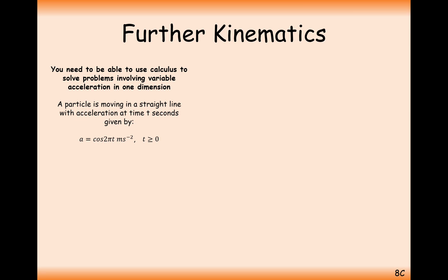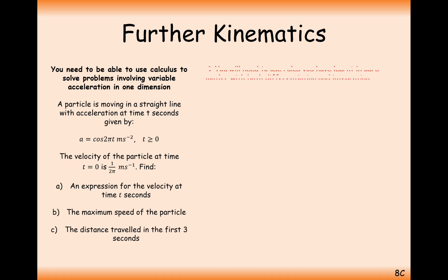So let's get started on the question. We have a particle moving in a straight line with acceleration given by a equals cos 2πt meters per second squared. The acceleration changes as time goes on, dependent upon the value of cos at that specific time t. The velocity of the particle at time t equals zero is 1 over 2π meters per second. You'll need to bring in the techniques of differentiation and integration from pure maths.